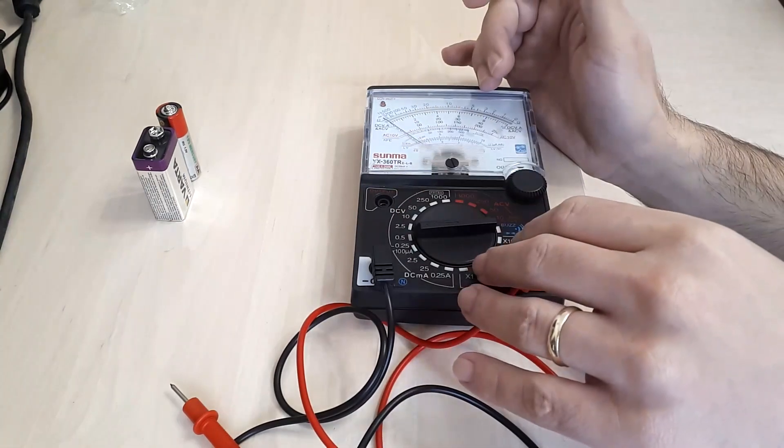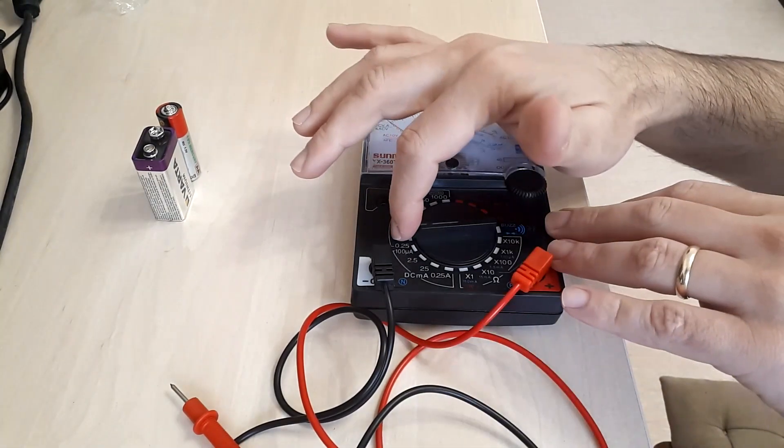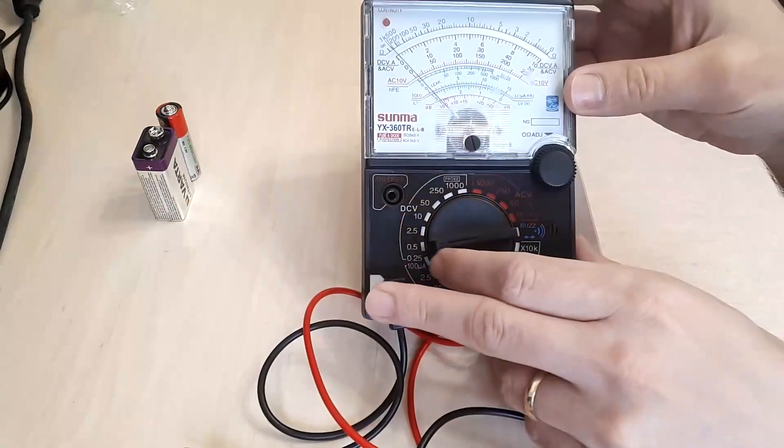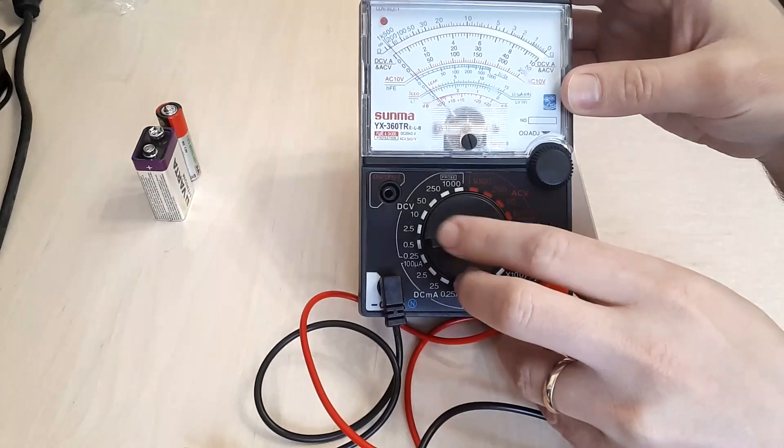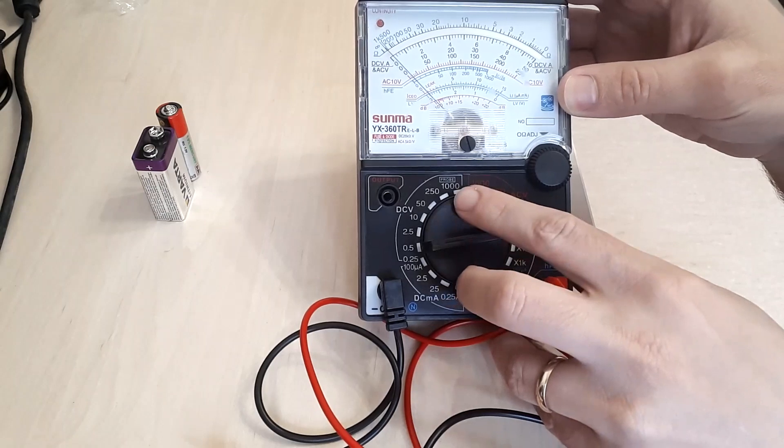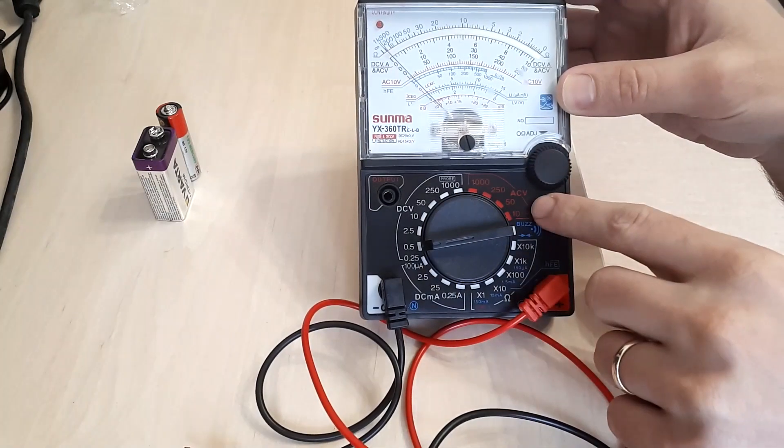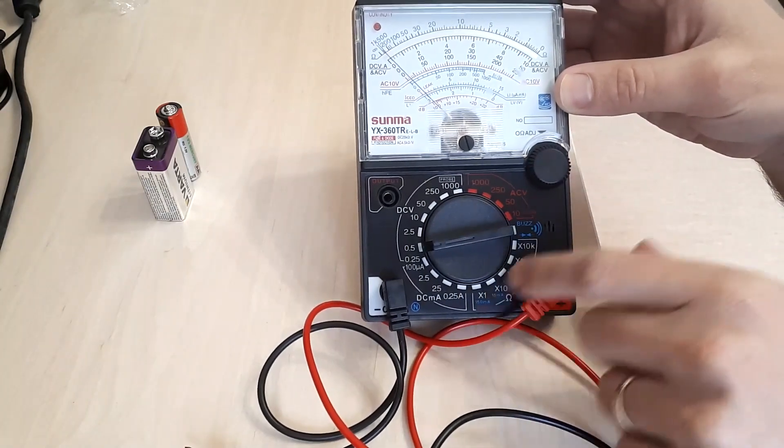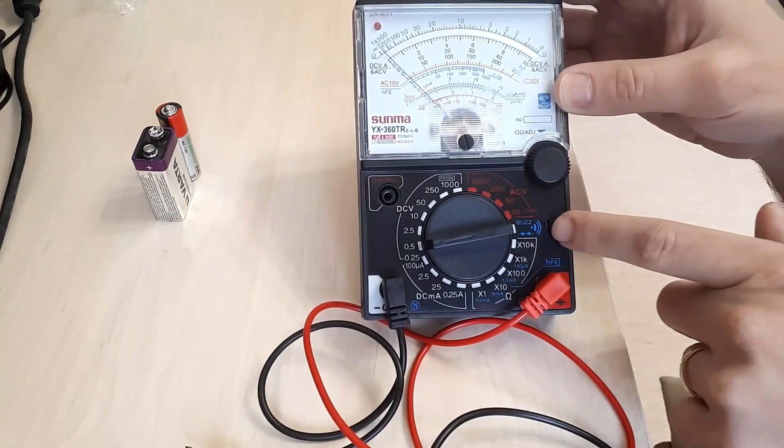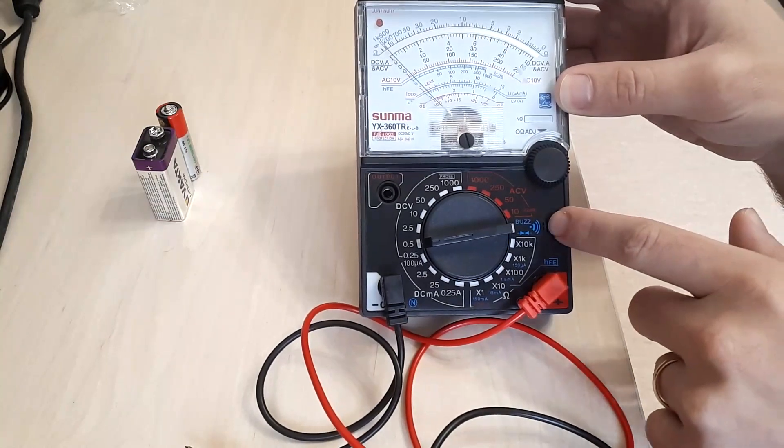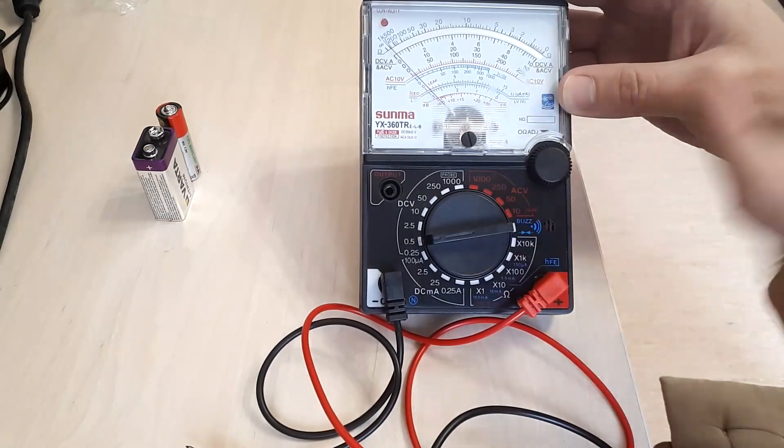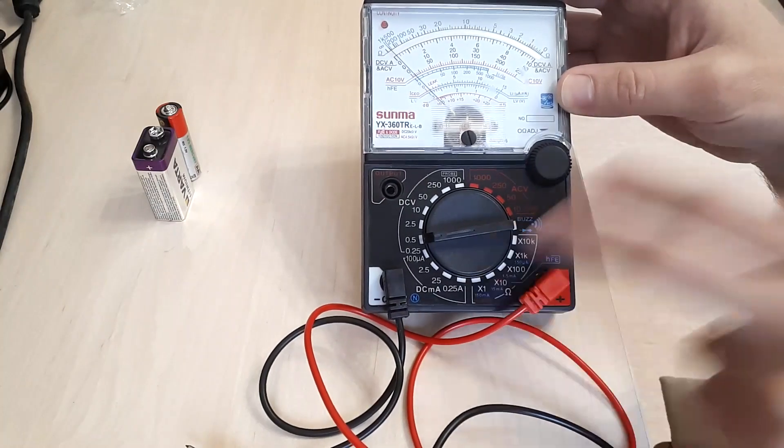As you can see on the scale, on the rotating switch it can measure DC voltages, AC voltages, resistance or continuity. It also has an integrated buzzer and it has a small current measurement capability.